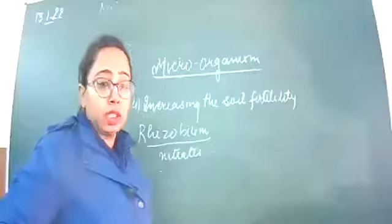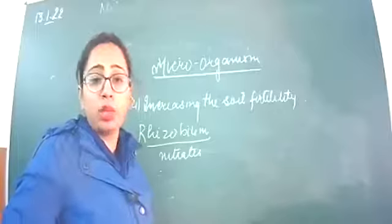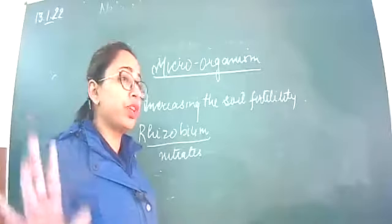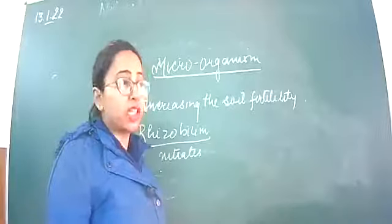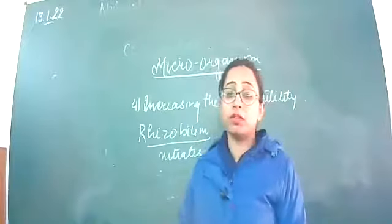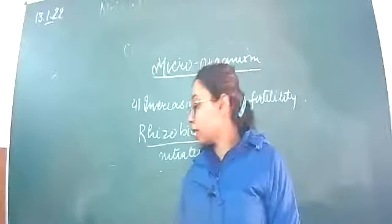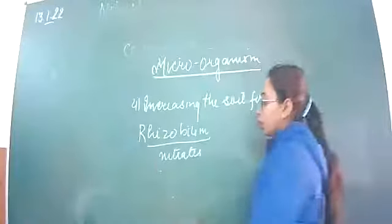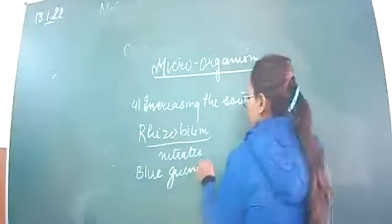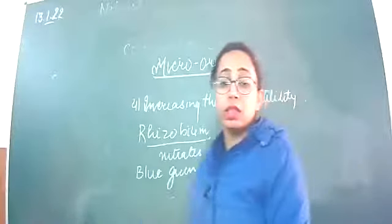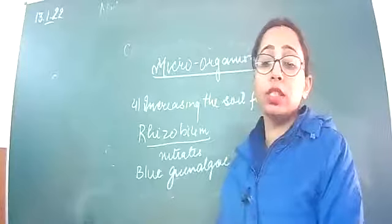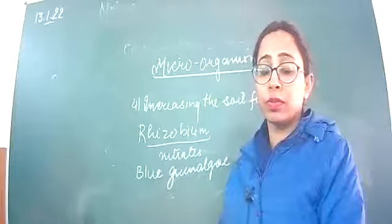Not only Rhizobium, but also some bacteria and blue-green algae help in the fixation of atmospheric nitrogen. The nitrogen is first converted into nitrites (NO2⁻) and further into nitrates (NO3⁻). This whole process is known as biological nitrogen fixation, and these organisms are therefore known as biological nitrogen fixers.